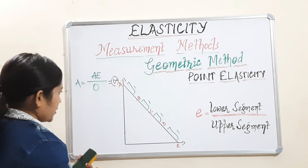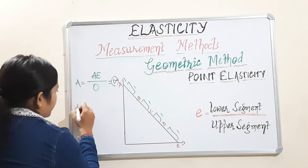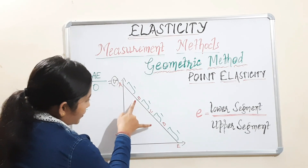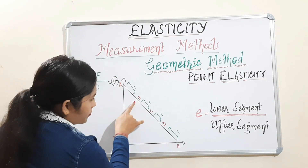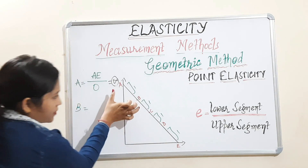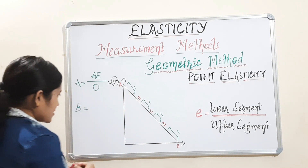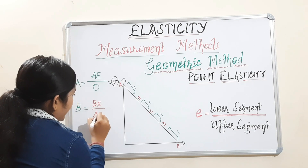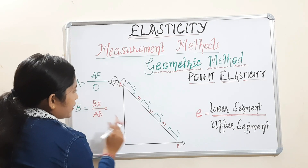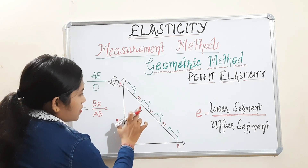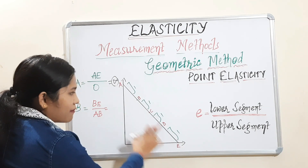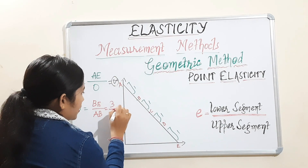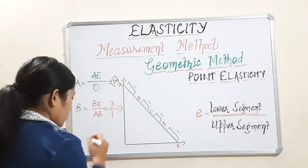Next, coming to point B. At point B, the lower segment will be BE and the upper segment is AB. So, BE divided by AB. BE — that means 1, 2, 3 — we have three parts. 3 divided by 1 part, that equals 3. So elasticity at point B is 3.